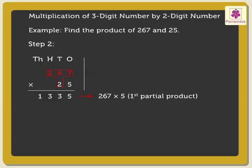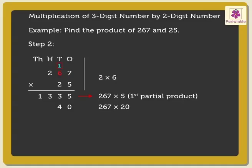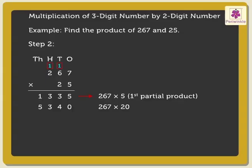Step 2: Multiply 267 by the digit in the tens place of the multiplier. As the digit 2 is in the tens place of the multiplier, we are actually multiplying 267 by 20. So we write a zero below the digit 5 of the first partial product. Next, 2 into 7 is equal to 14. 2 into 6 is equal to 12, plus the carried over 1, is equal to 13. Then, 2 into 2 is equal to 4, plus the carried over 1, is equal to 5. So we get 5,340 as the second partial product.